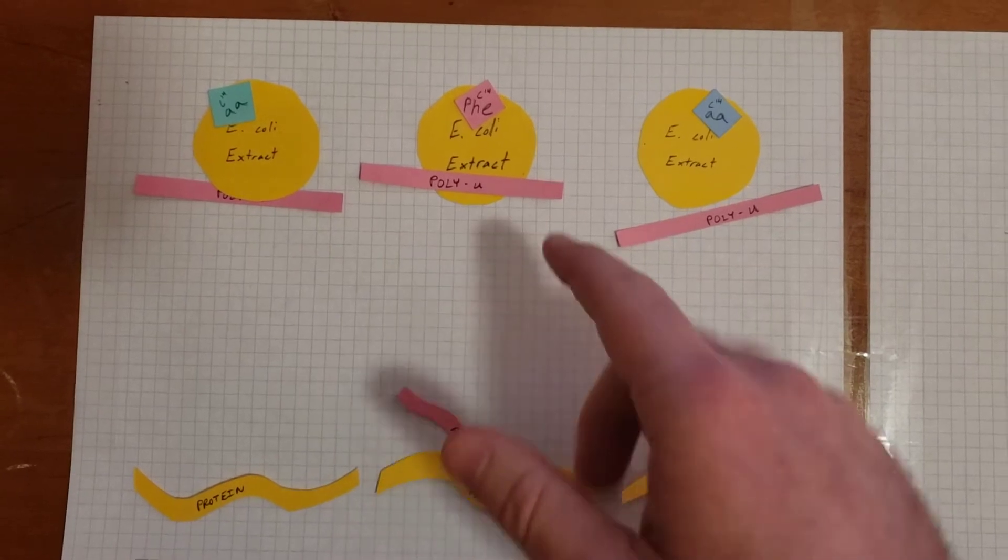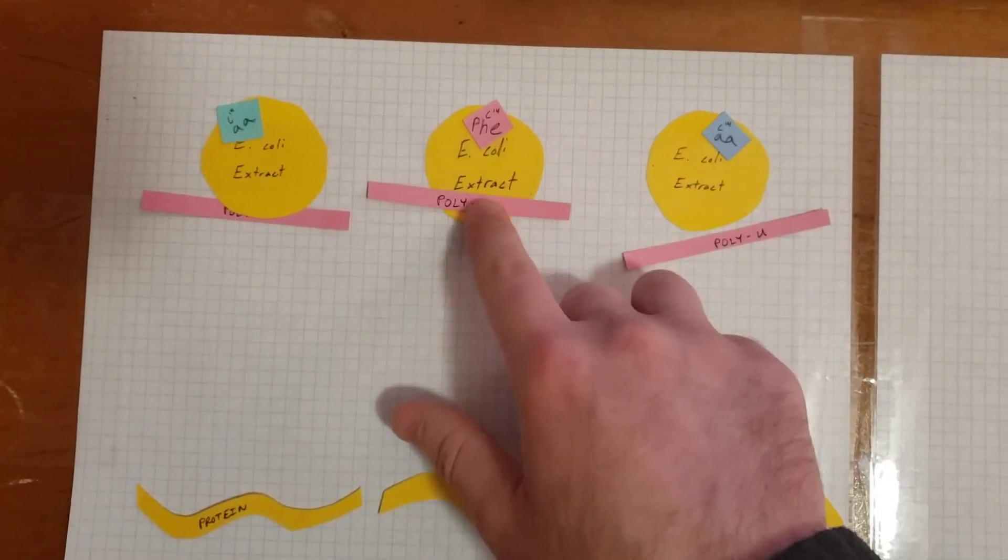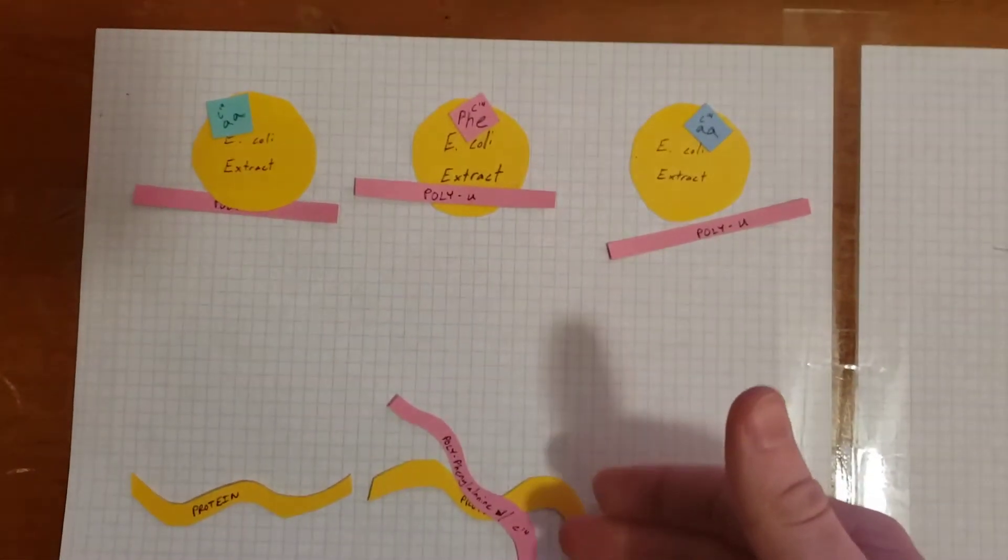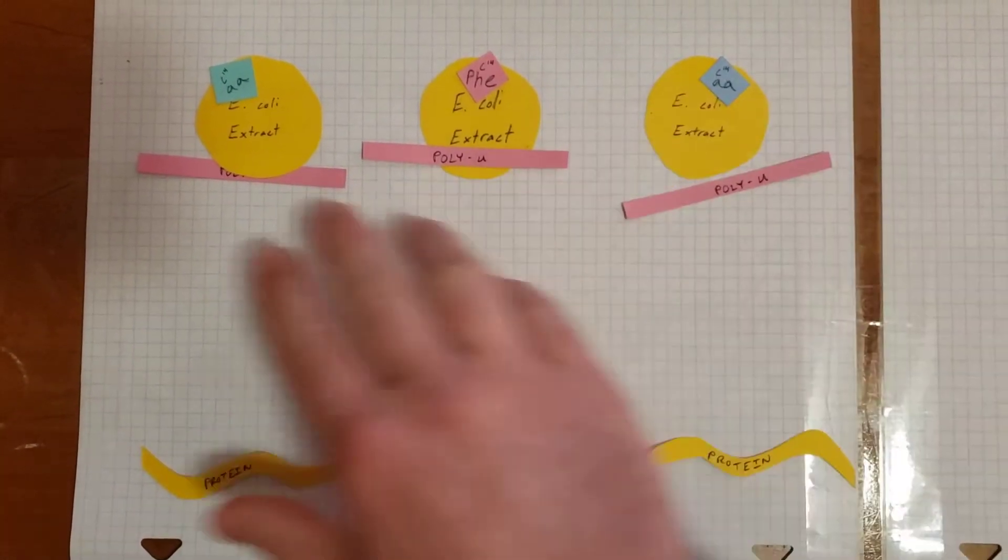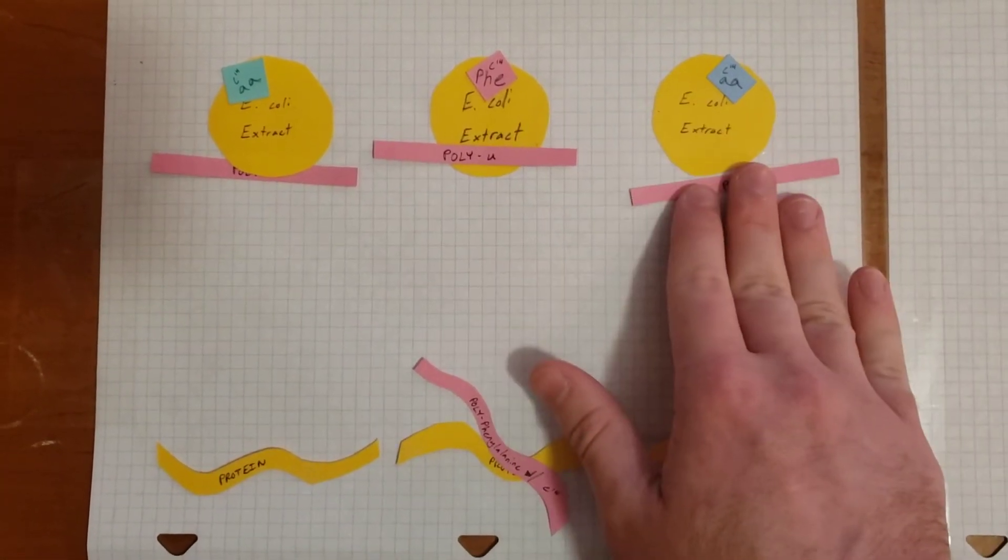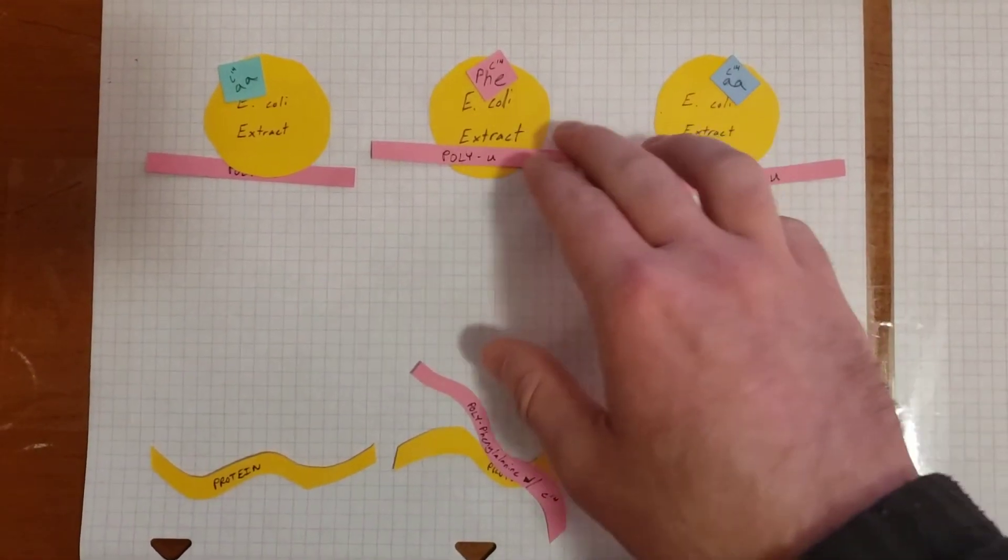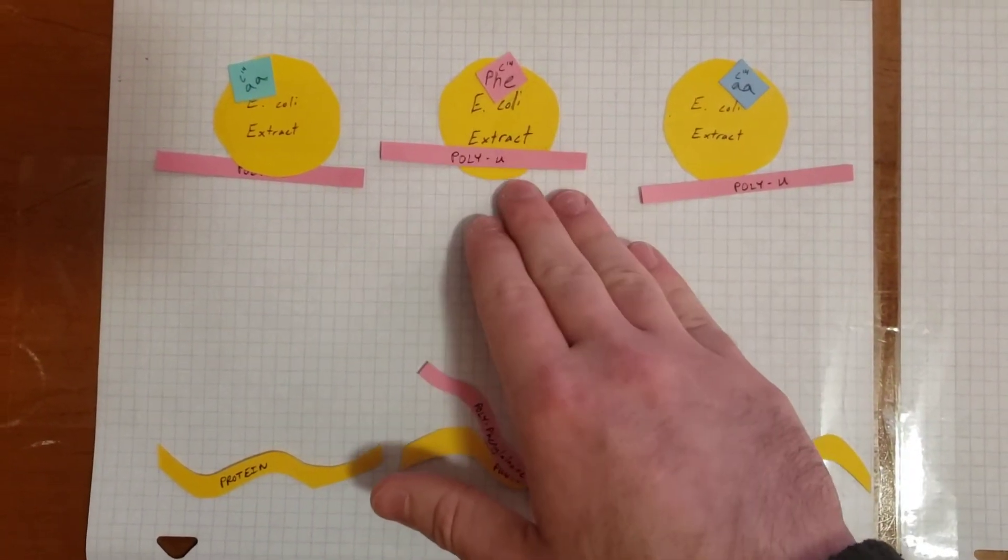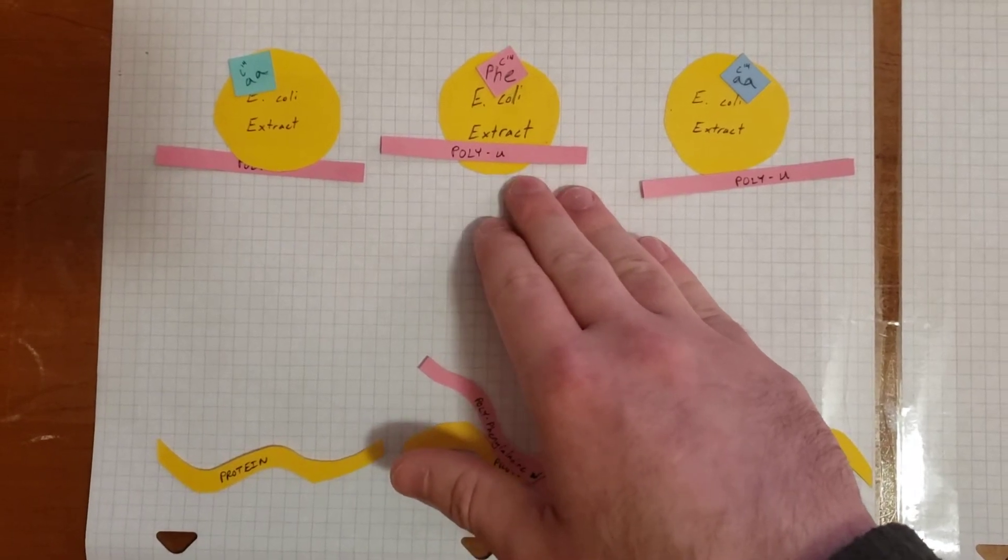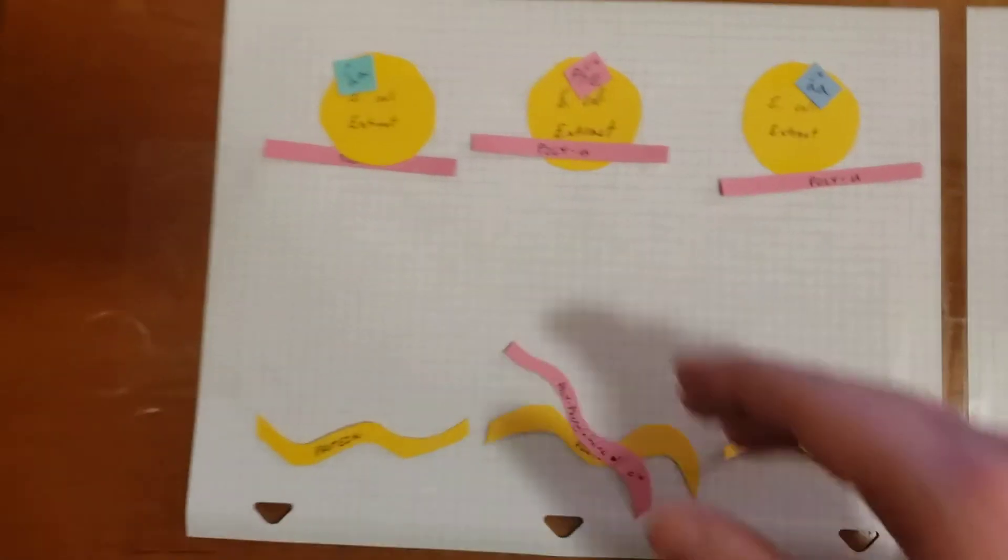So that implies that the phenylalanine worked together with the poly-U to create protein. None of the others did, none of the other amino acids worked with the poly-U to make protein. That's thus implying that specific orders of base pairs are required to make different proteins from amino acids.